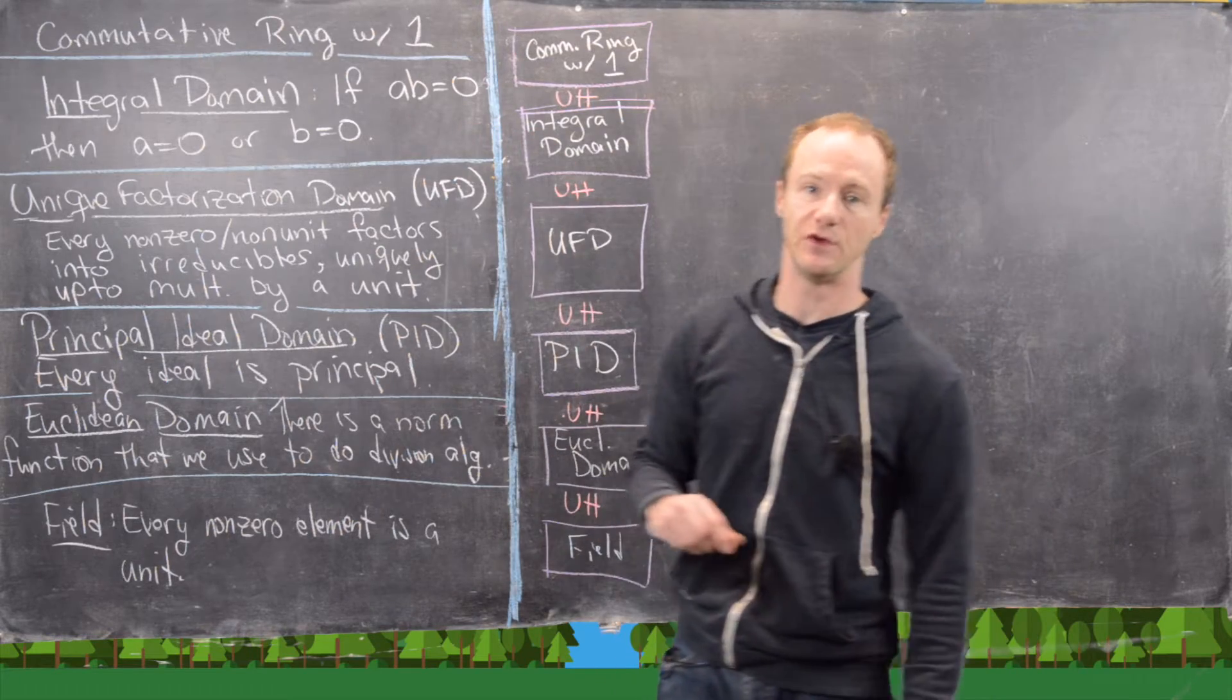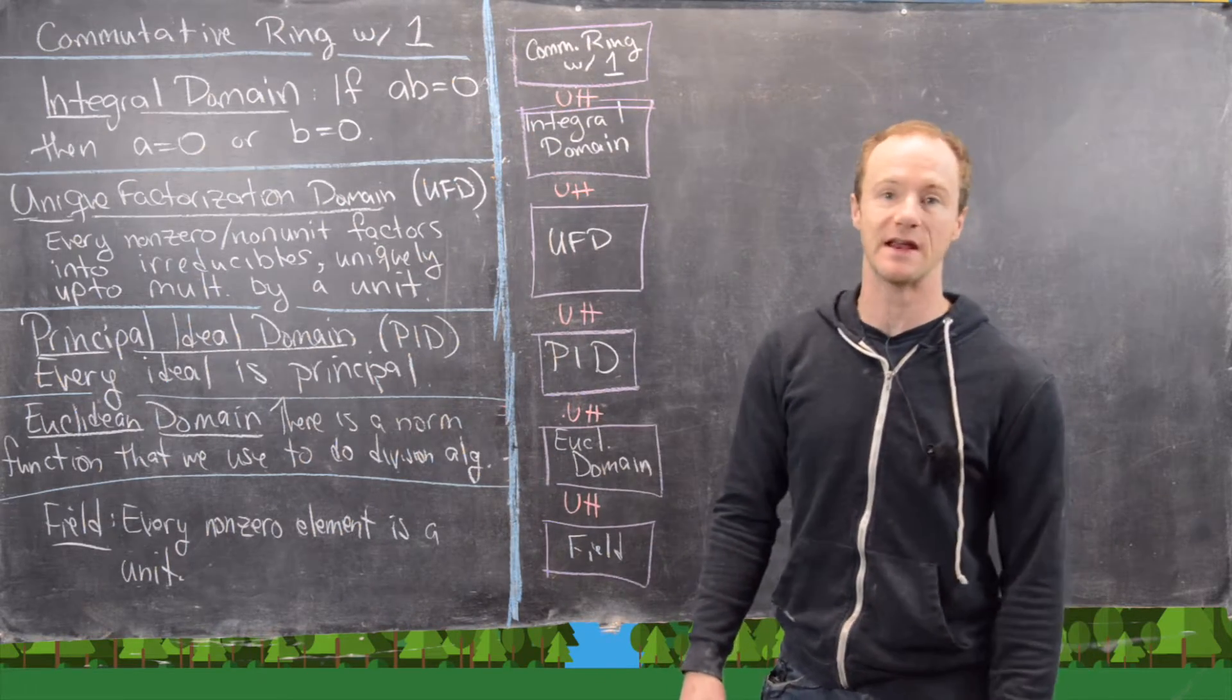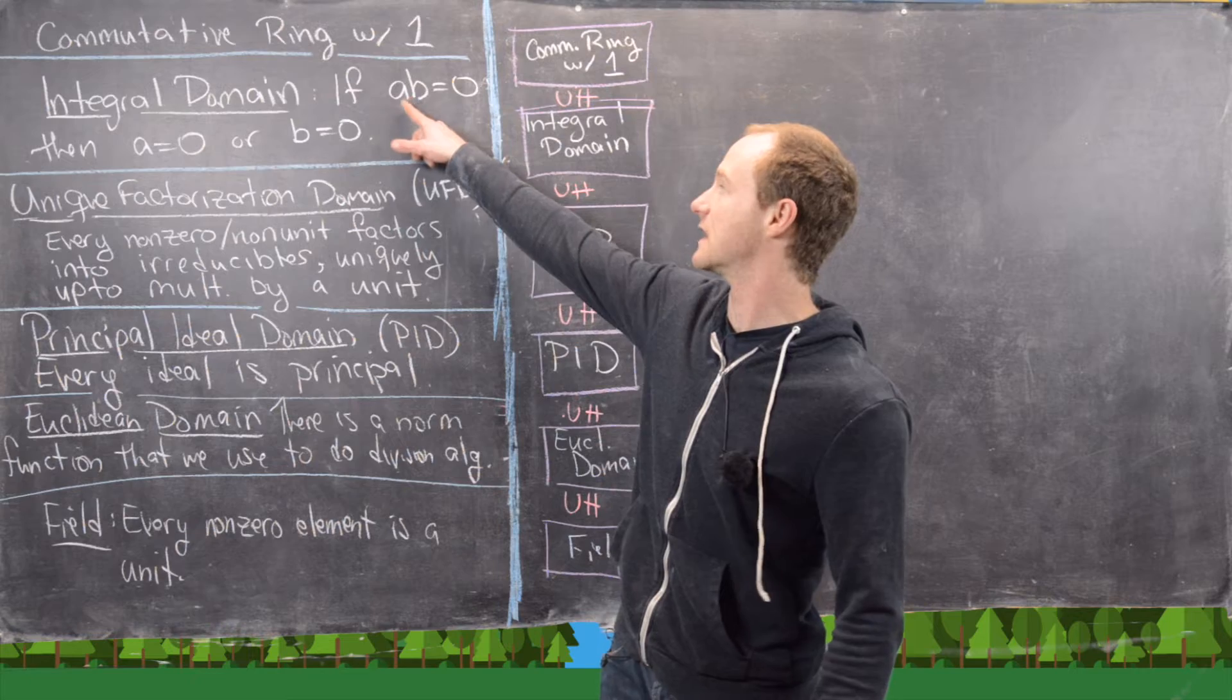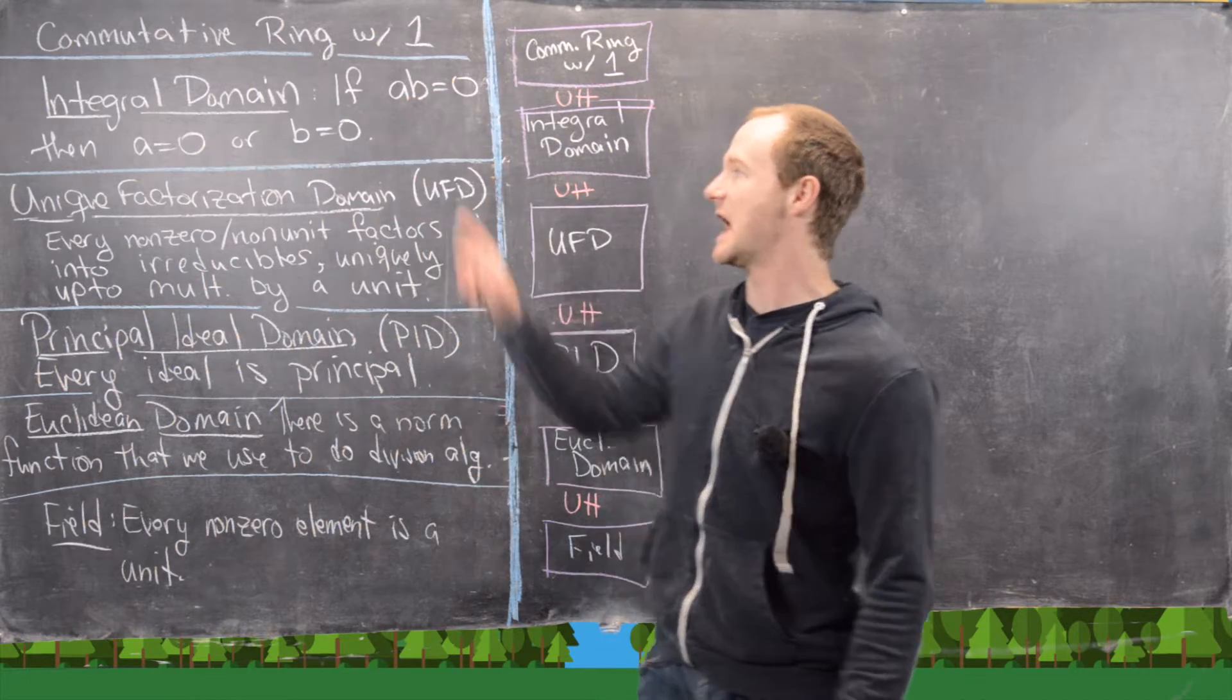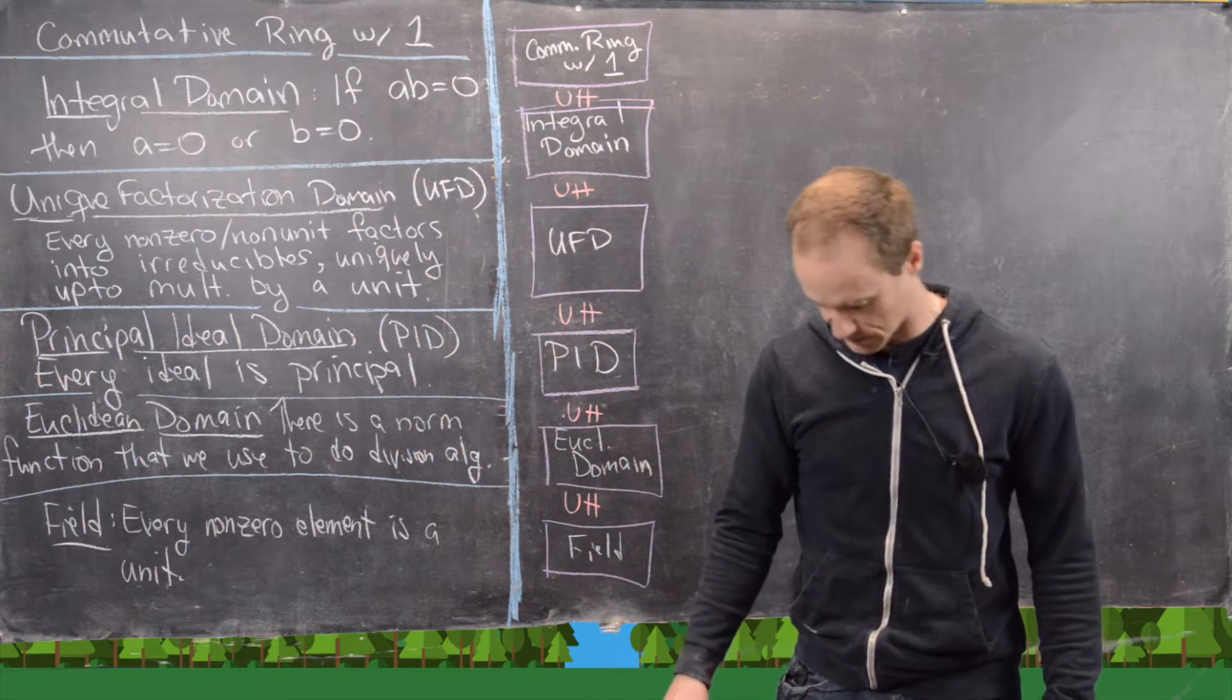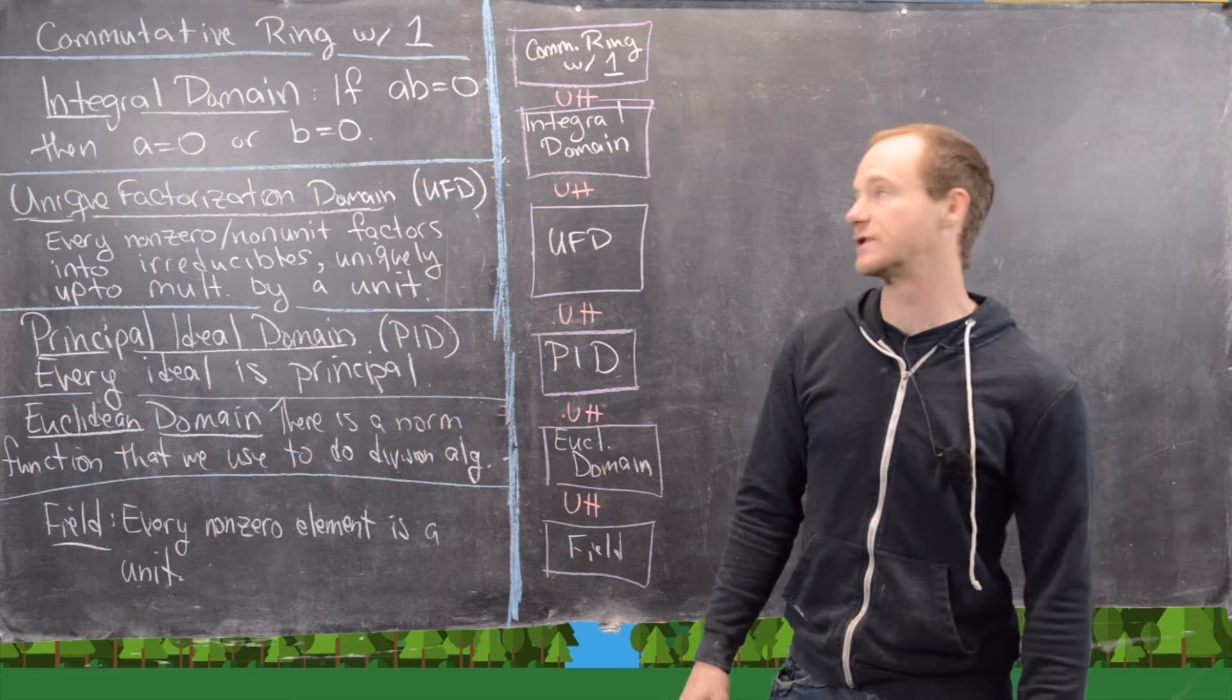And then a special type of commutative ring with one is called an integral domain. And it satisfies the property that if AB equals zero, then A equals zero or B equals zero. So in other words, there are no zero divisors.